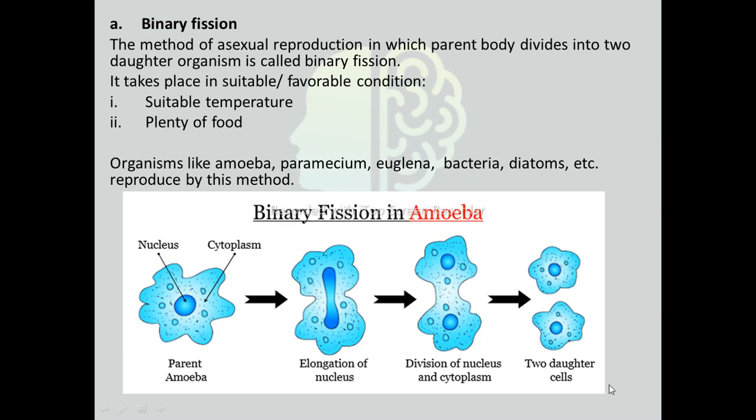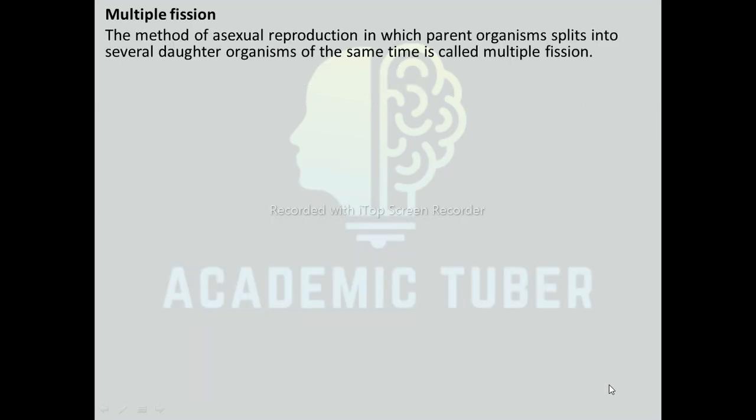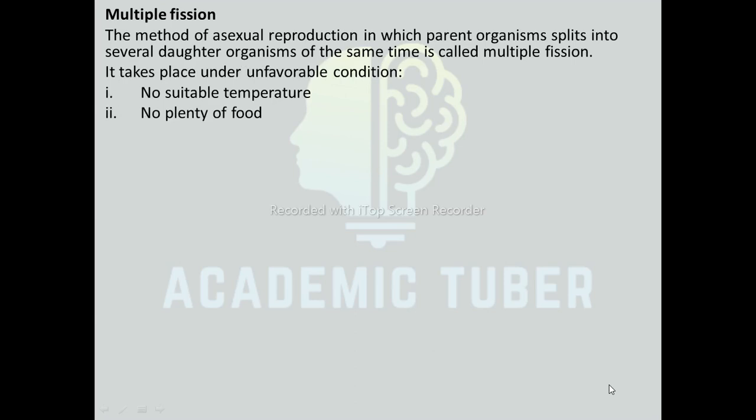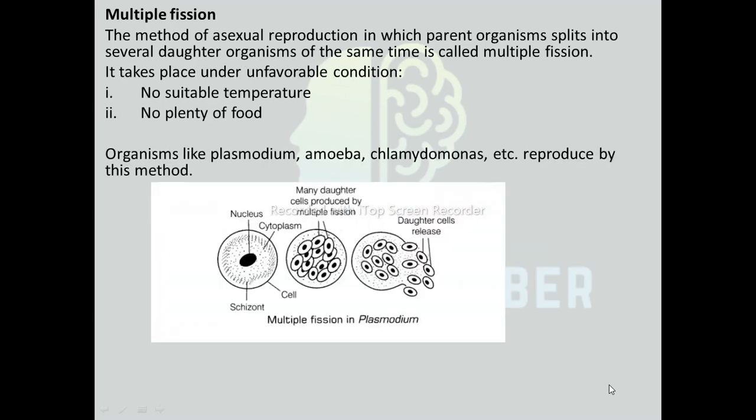Here is a diagram showing Binary Fission in Amoeba — the parent Amoeba splits into two daughter cells. Multiple Fission is the method in which a parent organism splits into several daughter organisms at the same time. It takes place under unfavorable conditions, i.e. when there is no suitable temperature and no plenty of food. Organisms like Plasmodium, Amoeba, and Chlamydomonas reproduce by this method. Here is a diagram showing Multiple Fission in Plasmodium, where a single cell produces many daughter cells.